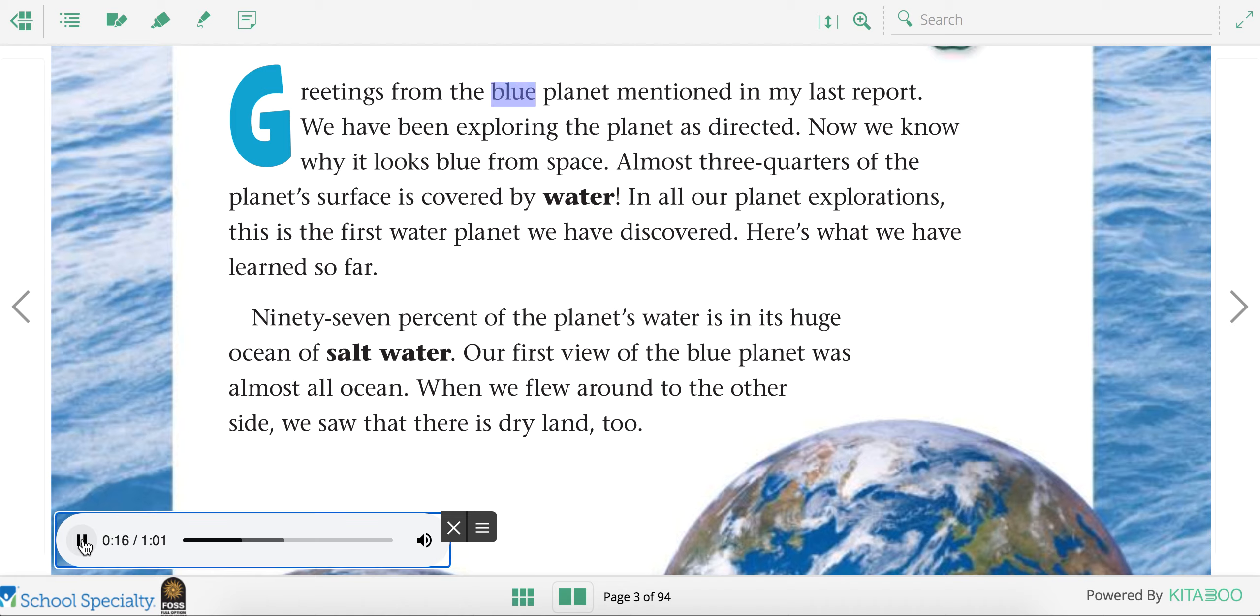Greetings from the Blue Planet mentioned in my last report. We have been exploring the planet as directed. Now we know why it looks blue from space. Almost three-quarters of the planet's surface is covered by water. In all our planet explorations, this is the first water planet we have discovered.